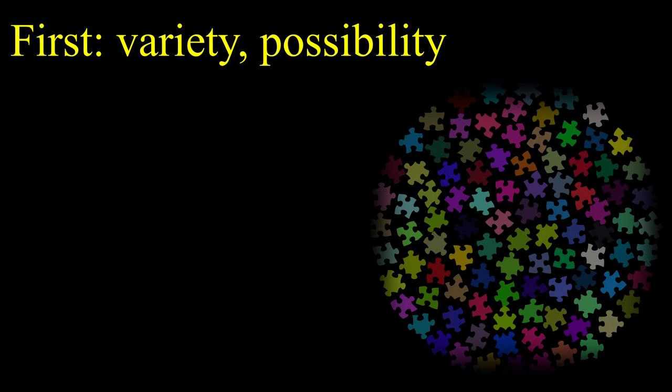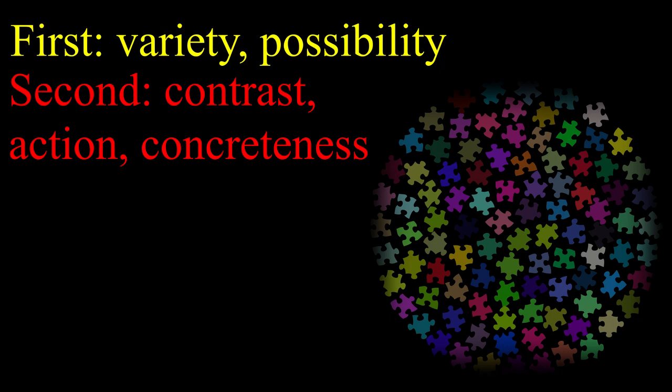First, the variety of puzzle pieces produces all kinds of fun possibilities. The puzzle could be infinite number of things. But we want to turn the pile of possibilities into a specific picture. So, second, we need to find contrasts. The variation of the puzzle pieces, that is, the fact that every puzzle piece is unique, is not enough and we need to find more radical contrasts.